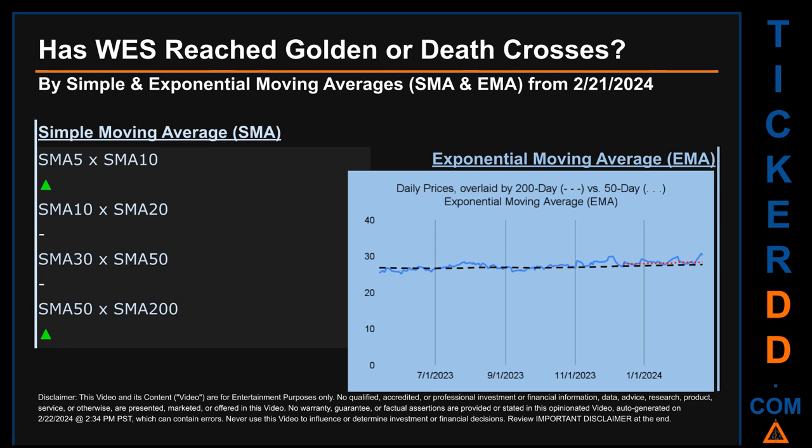Has WES price reached golden or death crosses? Golden cross and death cross are basic signals that compare average prices across two specified trade day ranges — a short-term versus a long-term range, for example five-day versus ten-day trade days. Essentially, a golden cross is a bullish signal — it appears when a ticker's short-term moving average crosses above its long-term average. Vice versa, a death cross is a bearish signal when the short-term crosses below its long-term moving average.